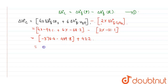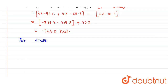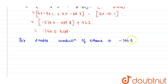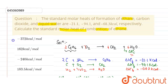This value comes out to be minus 744.0 kilocalories. Now, in the question it is asked for the standard molar heat of combustion of ethane per mole, and we have calculated for 2 moles. So if we divide by 2, for 1 mole the value will be equal to minus 744.0 kilocalories divided by 2, which comes out to be minus 372.0 kilocalories per mole. So the first option is correct. Thank you.